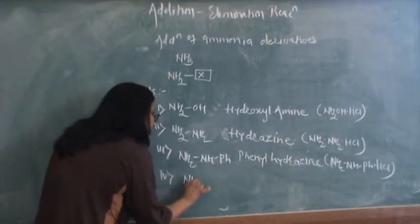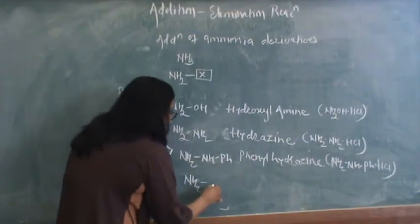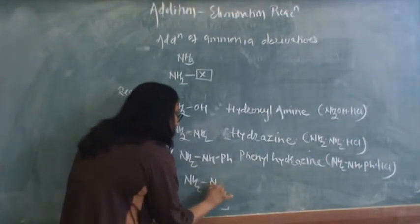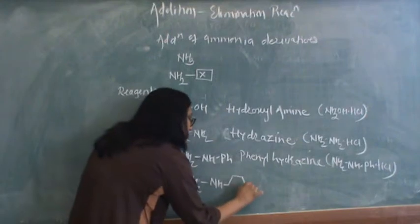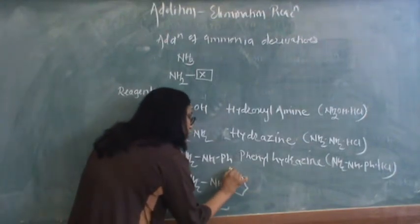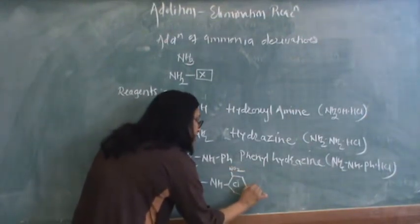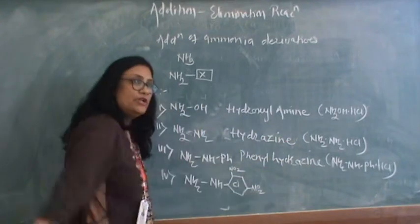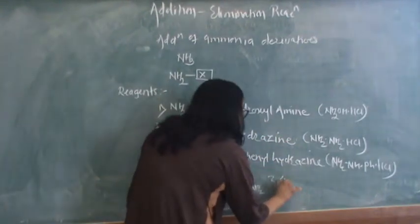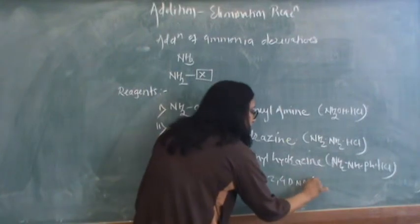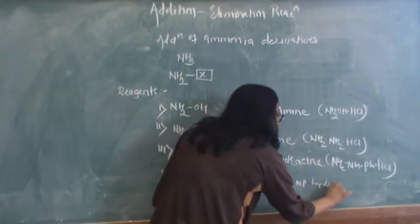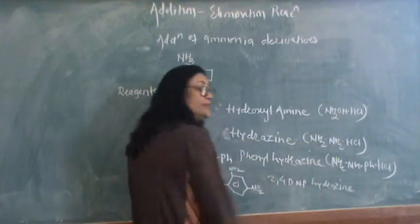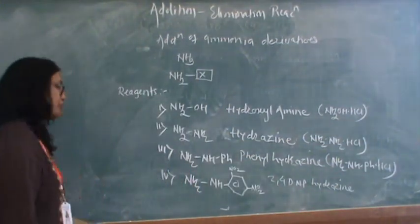Another molecule which can be written is NH2NH with two nitro groups at ortho and para positions. It is called as 2,4-dinitrophenylhydrazine. The product obtained will be called as hydrazone.